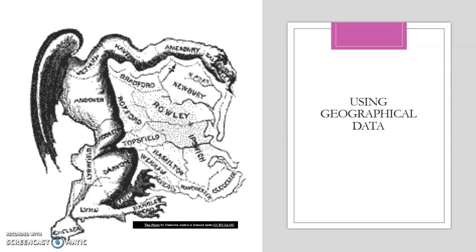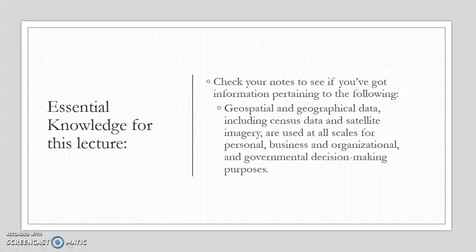If a state official is trying to decide whether the owner of a parcel of land is responsible for damage to the watershed from a factory they built, that's geographic data. If it has to do with why something is happening where it is, or how we get from place to place, the answer can be found in geographic data. To wrap things up, check your notes and see if you've captured the essential knowledge: geospatial and geographical data, including census data and satellite imagery, are used at all scales for personal, business, organizational, and governmental decision-making purposes. See you in the next lecture!